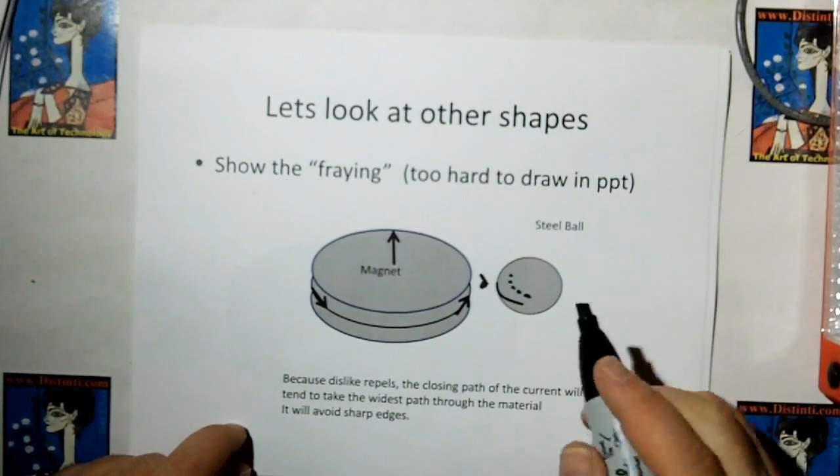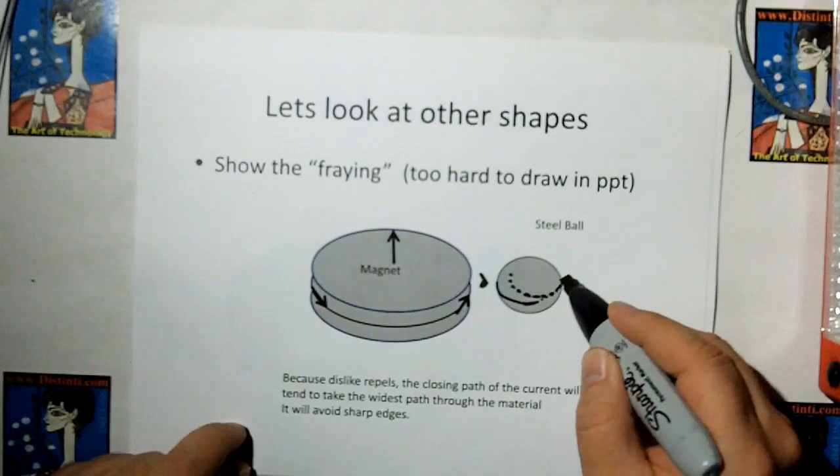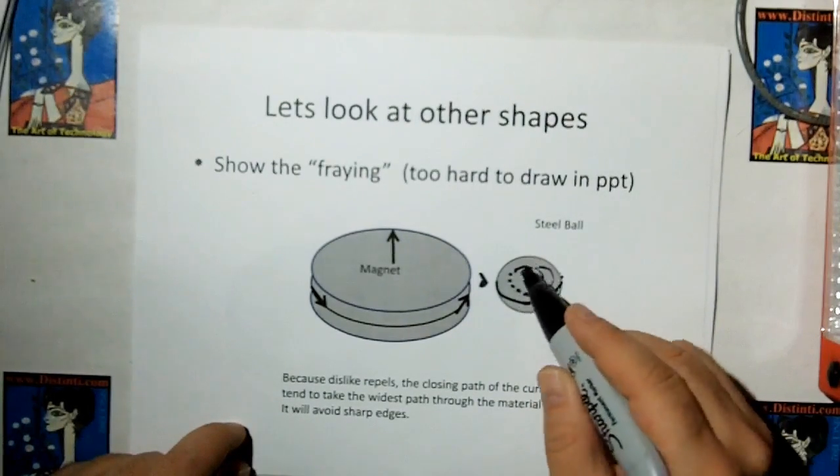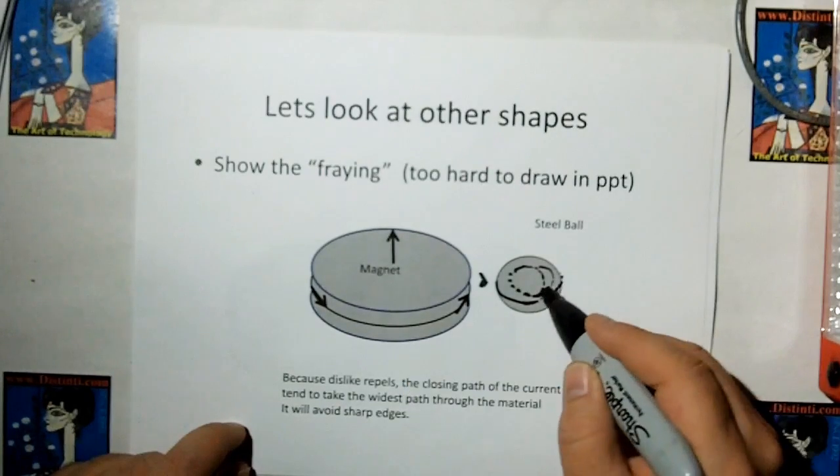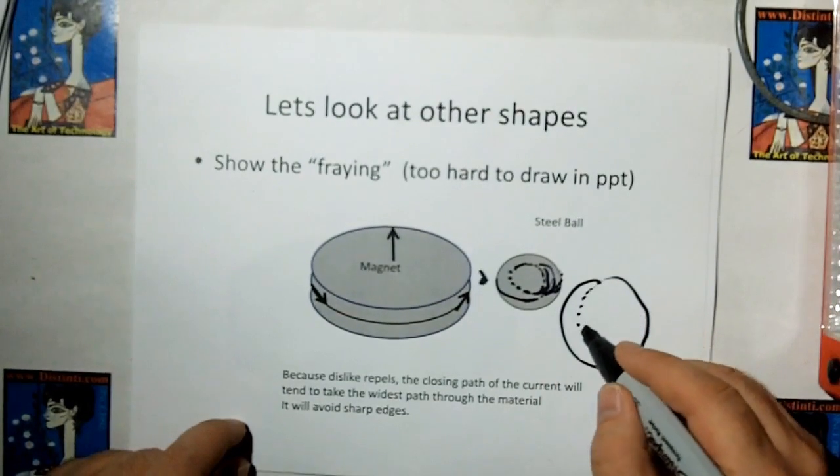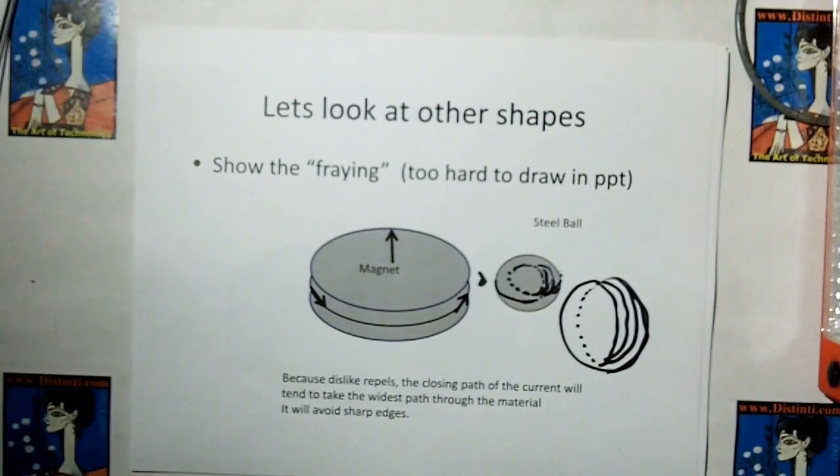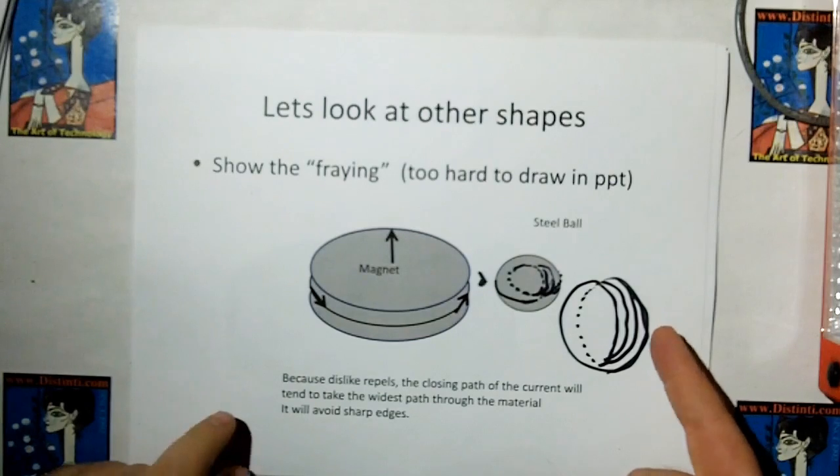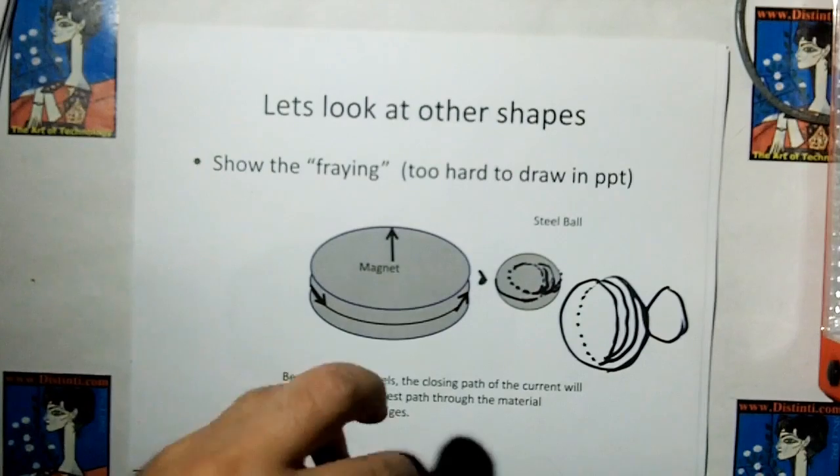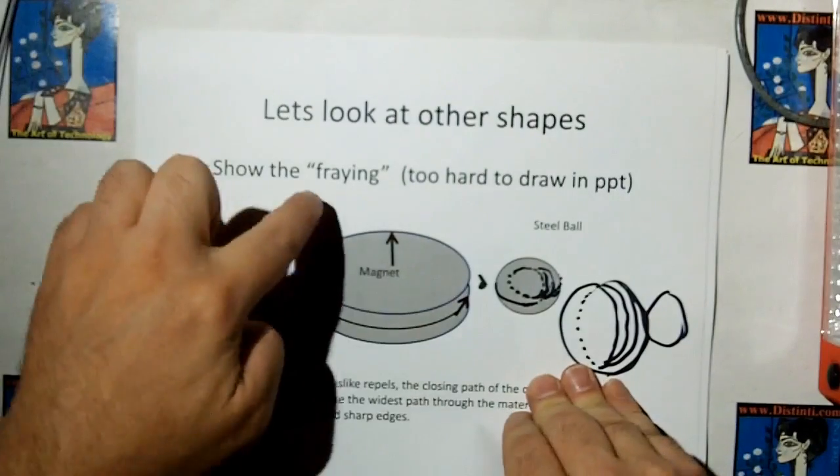And now what happens though is the return current, because it's being repelled by the edge current, it's likely, it's probably going to go some of the way back, but some of it's going to go through the middle. So the return current isn't going to be a nice straight ring like you have for a magnet. It's going to be diffused. So let me show you the ball from the top. Here's the ball. You're going to have the image of the current, but the return currents are going to be diffused throughout the ball. So the magnetic effect on the backside isn't going to be as strong, but you could attach another ball to it. In other words, you can have a strong enough magnet where you could have balls stacked up on balls. That's what I call fraying.